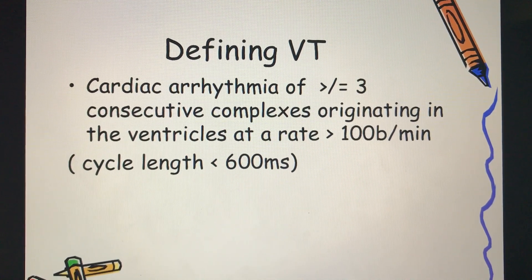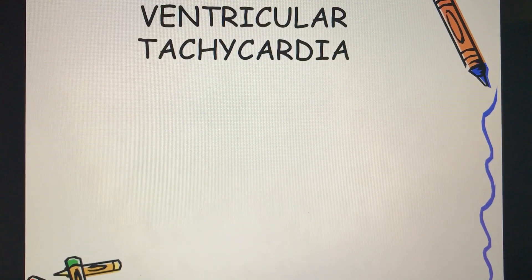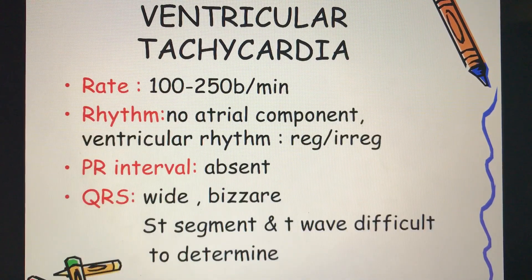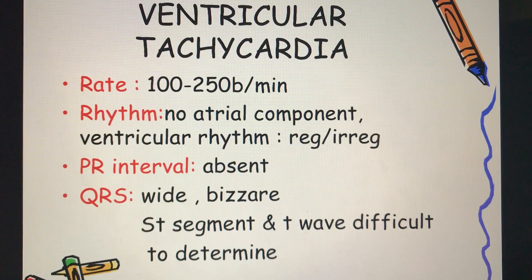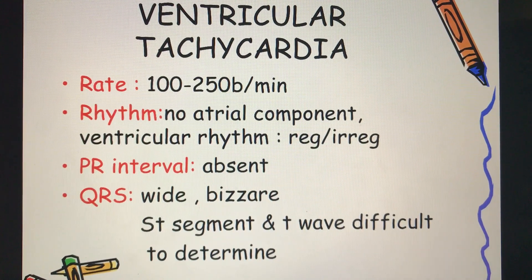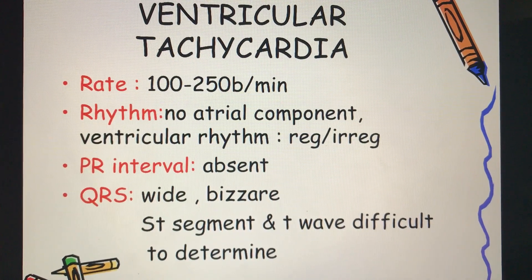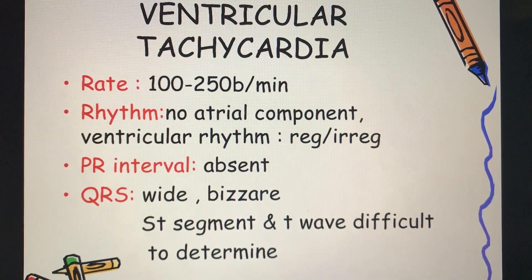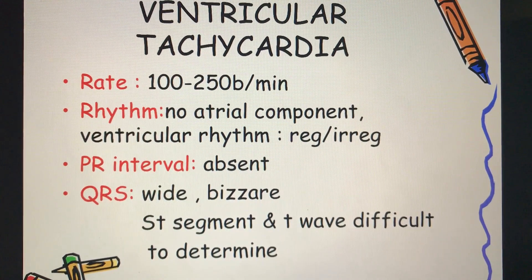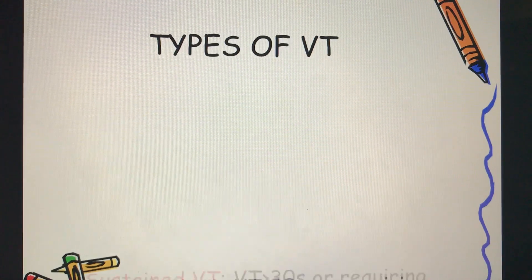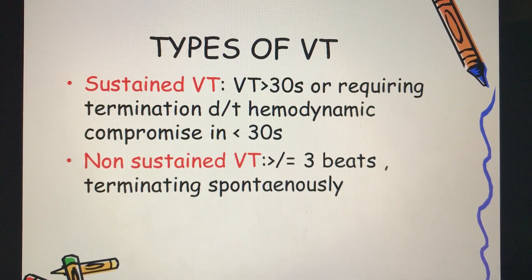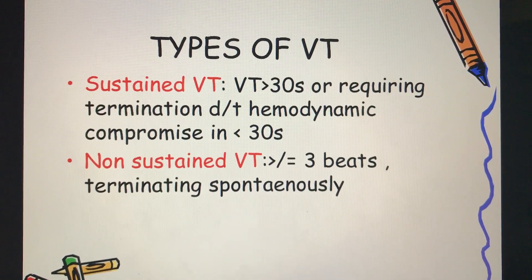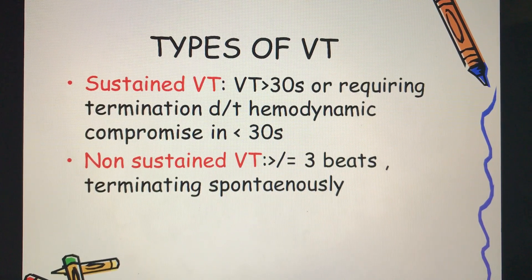The characteristics of ventricular tachycardia include a rate of 100 to 250 beats per minute, no atrial component, absent PR interval, and a wide and bizarre QRS complex. Sustained VT is when the VT lasts more than 30 seconds or requires termination within 30 seconds due to hemodynamic compromise.